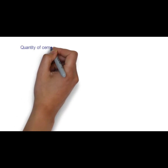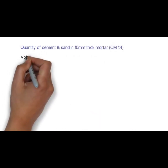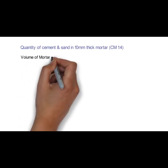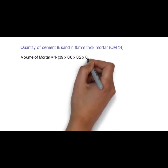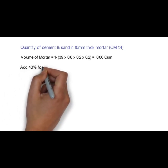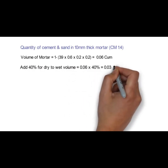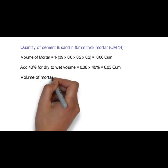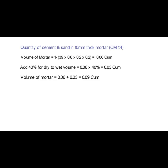Now we have to calculate the quantity of cement and sand in 10 mm thick mortar. Volume of mortar: the formula is 1 − (39 × 0.6 × 0.2 × 0.2) = 0.06 cubic meter. Now we will add 40% for dry to wet volume conversion: 0.06 × 40% = 0.03 cubic meter. So the total volume of mortar shall be 0.06 + 0.03 = 0.09 cubic meter.